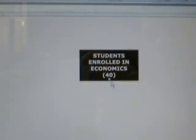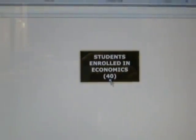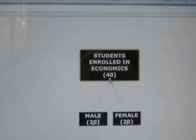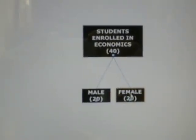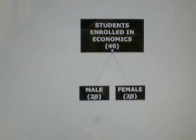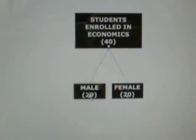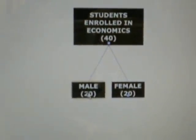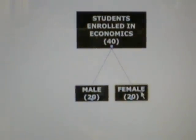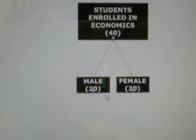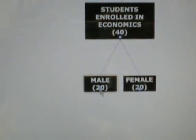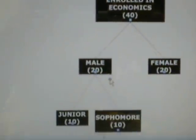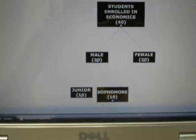First, I'm going to start with 40 economics students in the class. After that, I split it into male and female — 20 males and 20 females. If I'm looking for males, I'll go ahead and split that into classes.